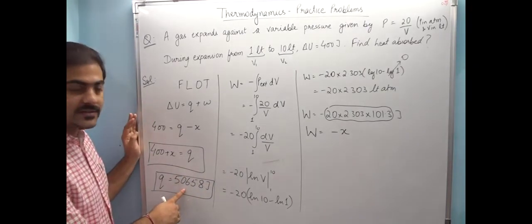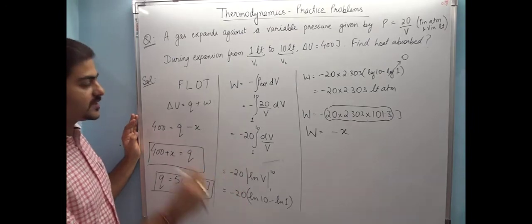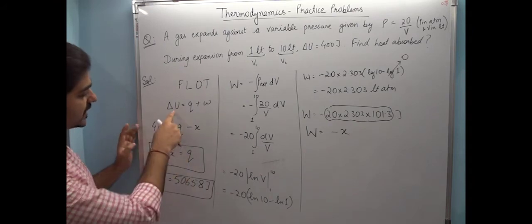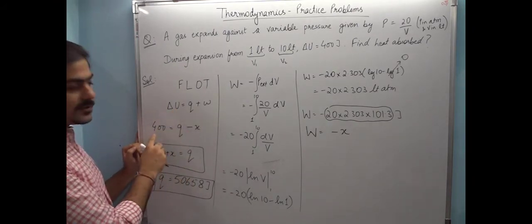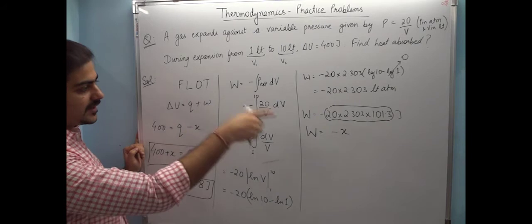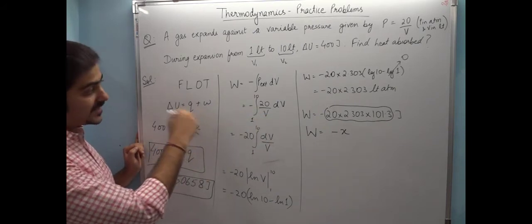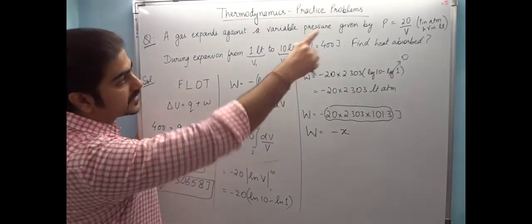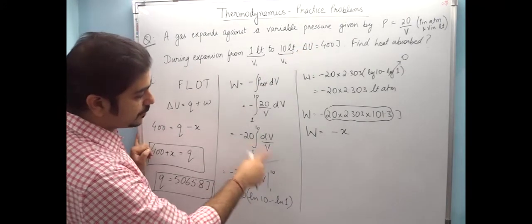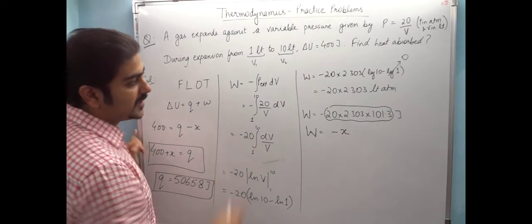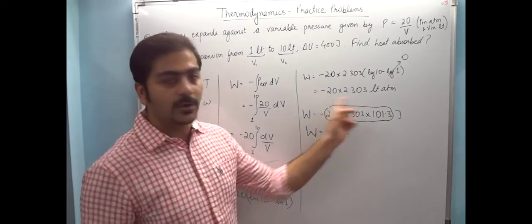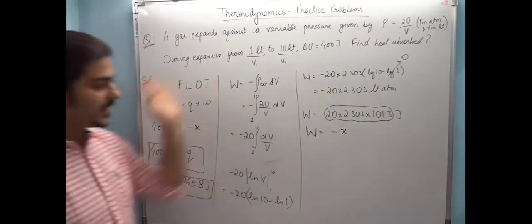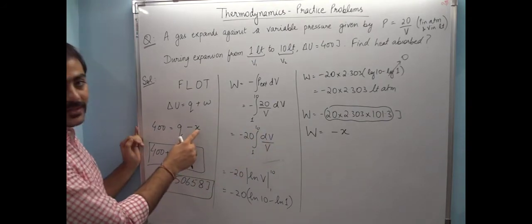But how did we do it? Let's quickly recap. First applied the first law: delta U equals Q plus W. Delta U value is given. If I calculate work done, Q will come. How is work done calculated? Work done is minus P external dV. Put the value of P external, that is 20 by V. Integrate completely from limits 1 to 10. So finally the answer that came was in liter atmosphere. Convert that to joules.